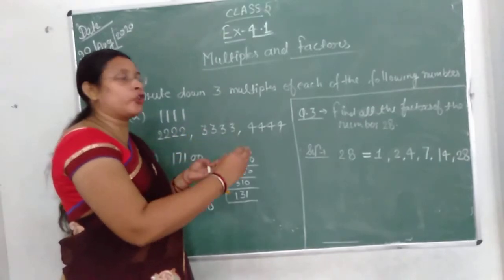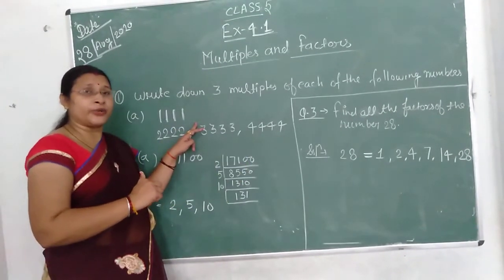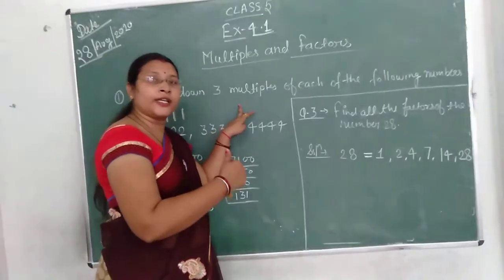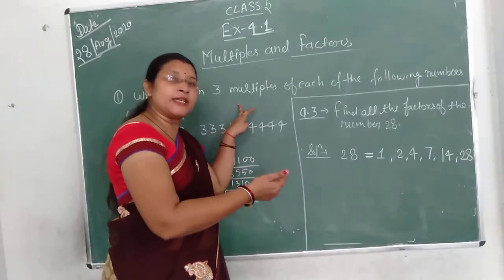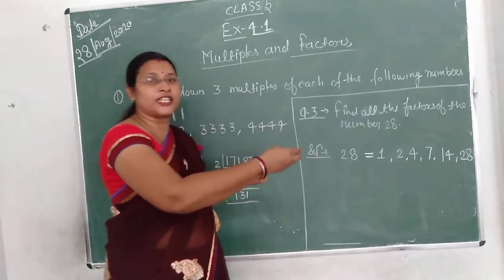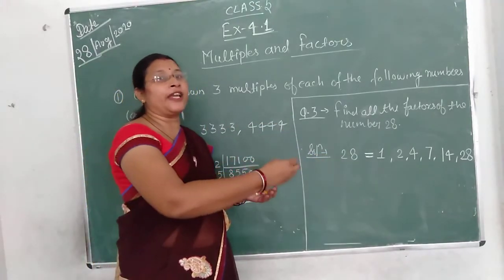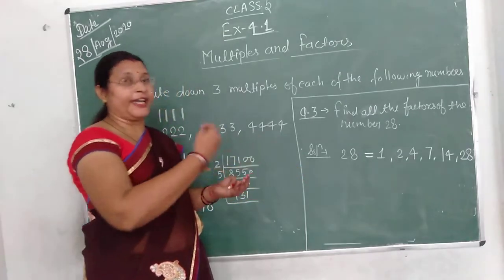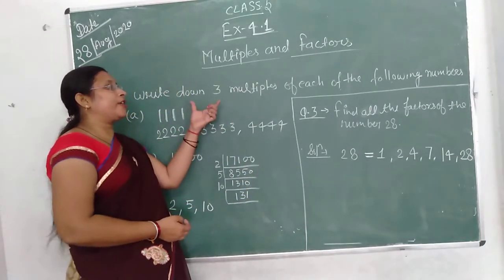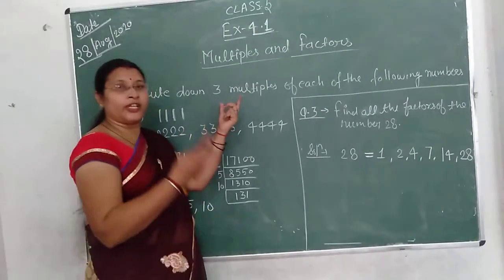So we have to find three multiples. For example, take two, three, four. Even numbers are two, four, six. And if there are odd numbers, then one, three, five — like three, five, nine. So the next step is to write three multiples.